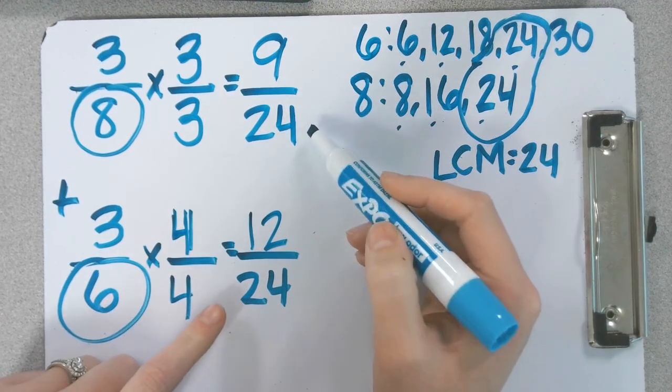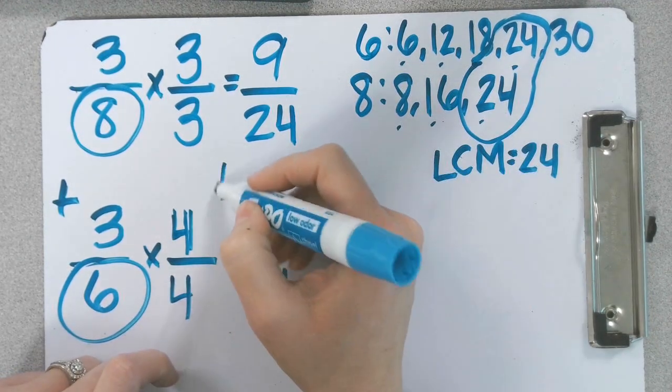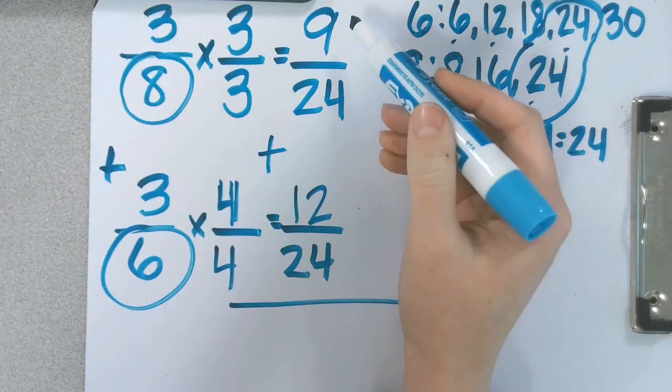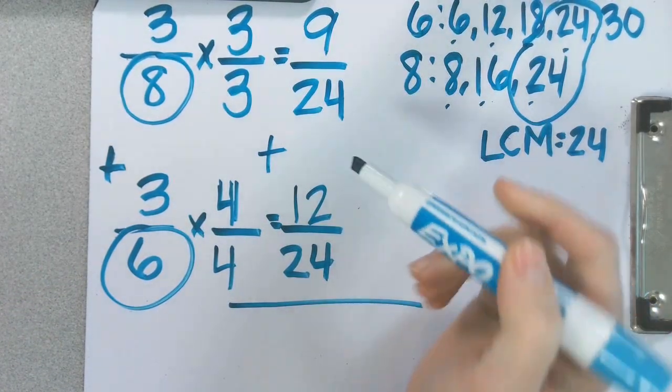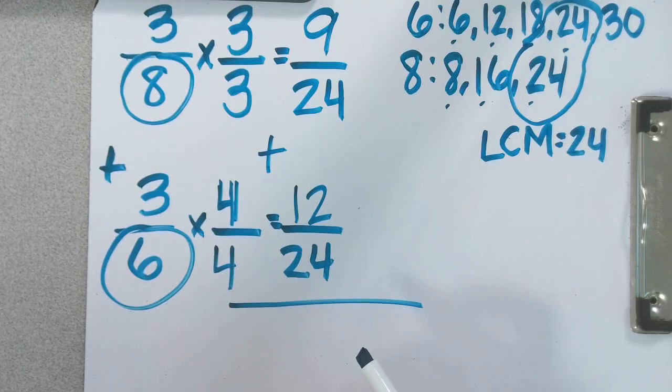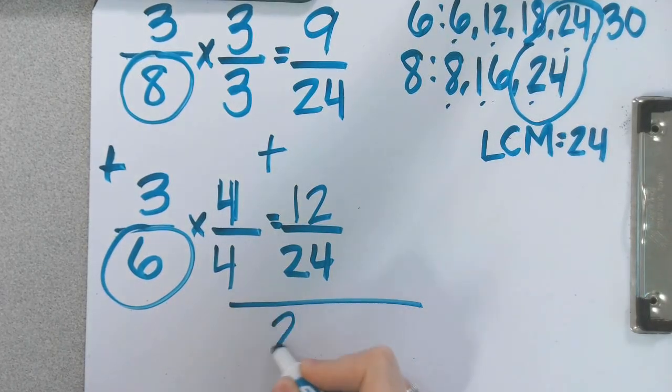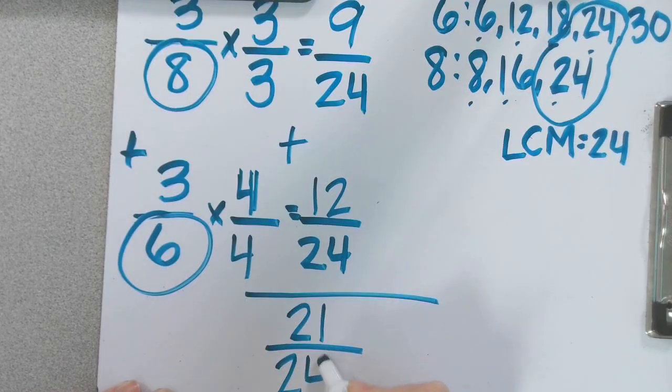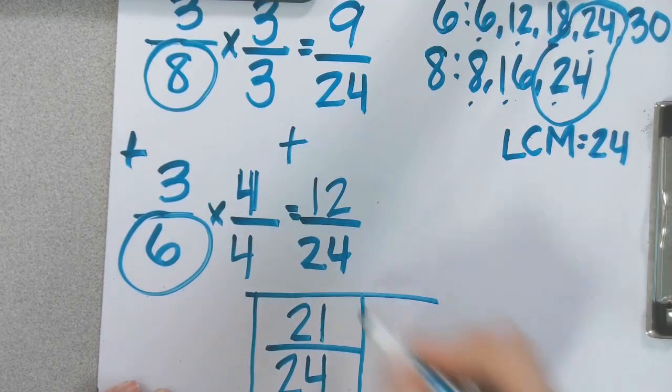Now, do we have a common denominator? Yep. Let's add them up. 9 plus 12. Whisper it in your hand. And on the count of 3, release. Ready? 9 plus 12. 1, 2, 3. 21. 21 over 24. 21 twenty-fourths.